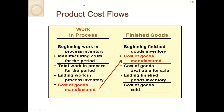Once we have the cost of goods manufactured for the period, that flows into finished goods inventory. Beginning finished goods inventory plus cost of goods manufactured equals cost of goods available for sale, minus ending finished goods inventory equals cost of goods sold. Note the distinction between the two key terms: cost of goods manufactured and cost of goods sold. This is how we arrive at cost of goods sold in a manufacturing company.